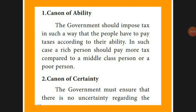The first one is the Canon of Ability. Canon of Ability means the government has to impose tax on its people according to their paying ability. For example, a rich person can pay more tax and a poor person can pay lesser tax. So the tax has to be collected according to their ability.